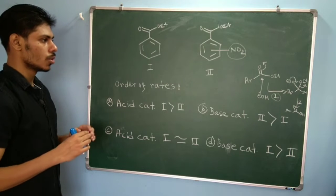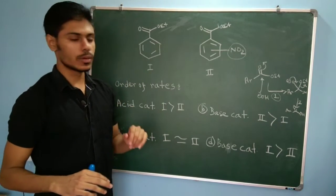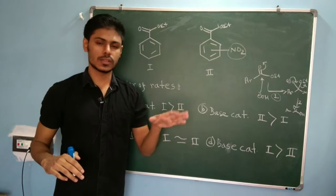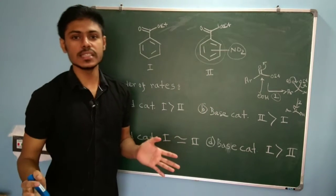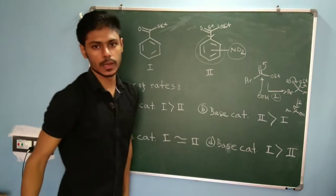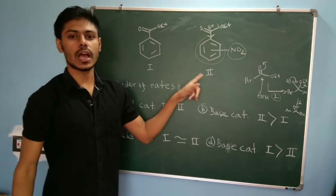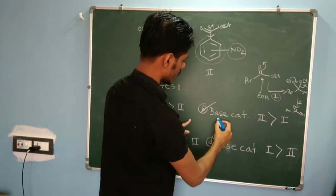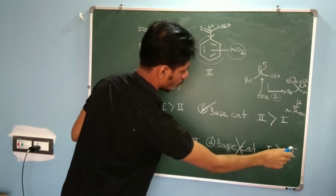In the base-catalyzed reaction, the attack of OH minus is the rate-determining step. Comparing compounds 1 and 2, compound 2 has a nitro group. Regardless of whether the nitro group is at ortho, para, or meta position, the ring becomes electron-deficient. This withdraws electron density from the carbonyl center, introducing more delta-positive charge there, making the attack of OH minus faster. Therefore, compound 2 undergoes faster ester hydrolysis in base-catalyzed reaction, making option B correct and option A wrong.